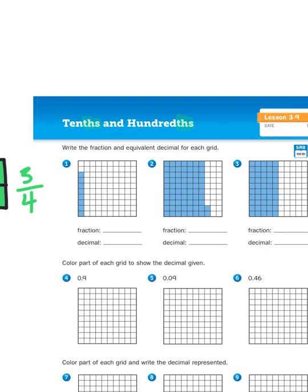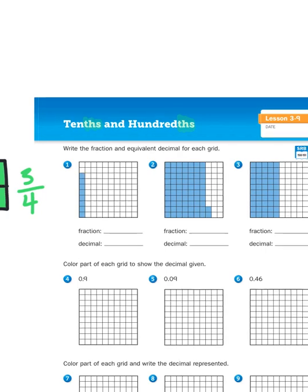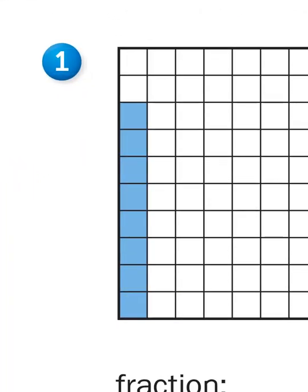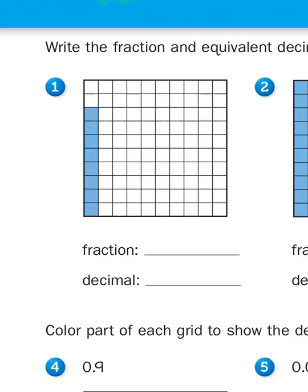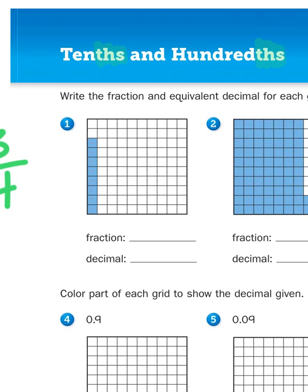So when I look at the first drawing here for number one, I can see that there are a total of one, two, three, four, five, six, seven, eight boxes shaded in in this first column. So that would make my fraction eight out of one hundred. So there's a total of one hundred boxes, eight of them are shaded in. That makes my fraction eight one hundredths.